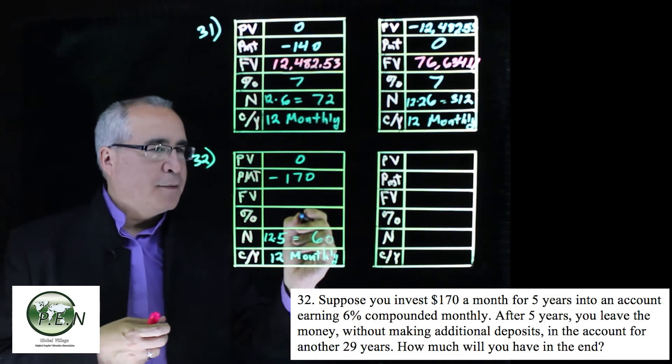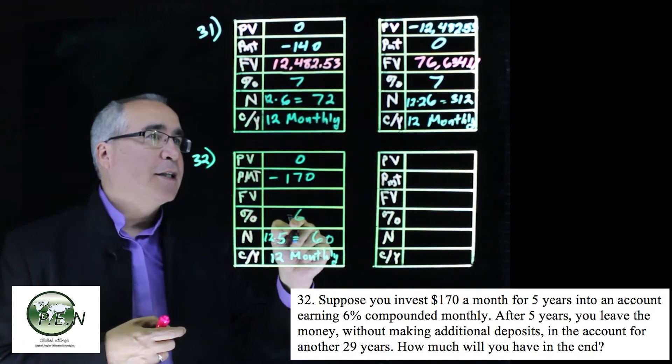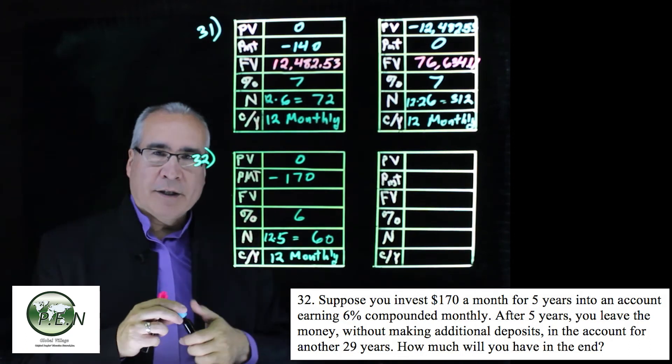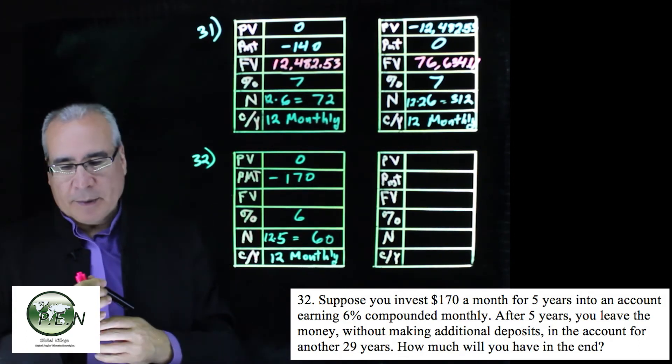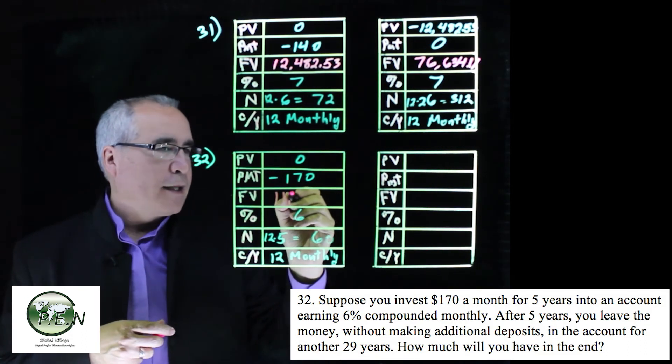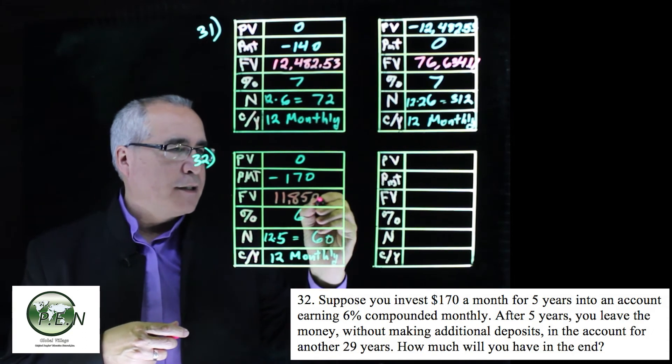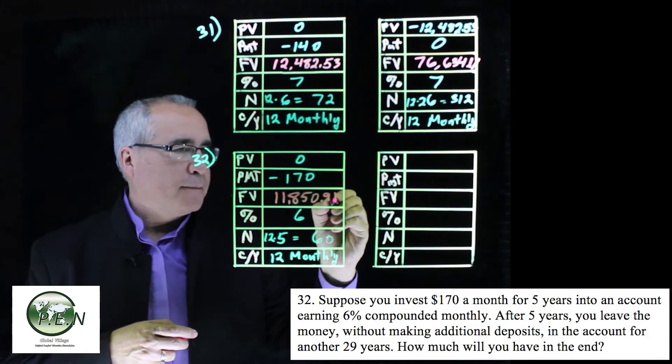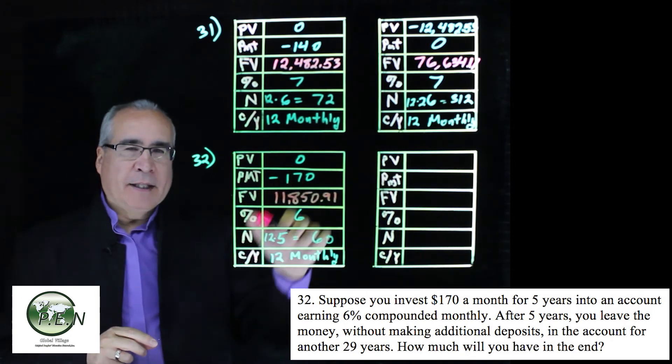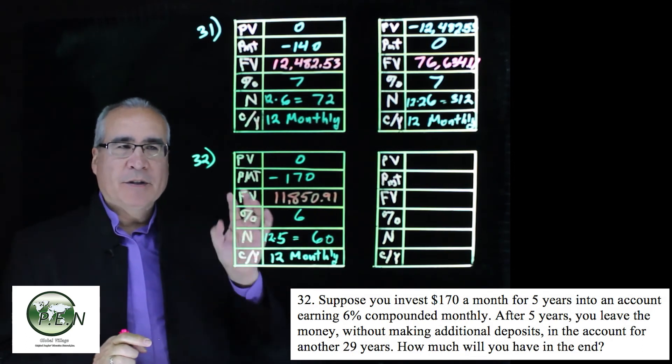That's 12 times 5, so we're going to have 60 for our number of periods. We're getting 6% interest, not 7% but 6%. We just need to calculate the future value, click the button, and it pops up that we have saved $11,850.91. Just like the last time, we're going to stop making the monthly payments, the monthly investment.